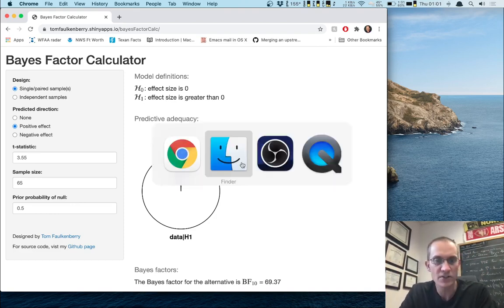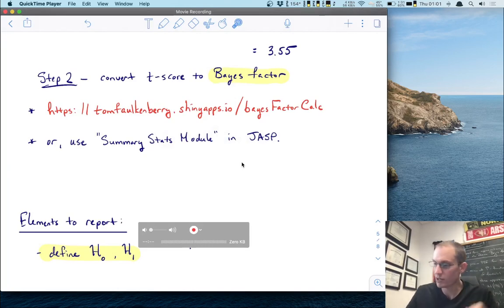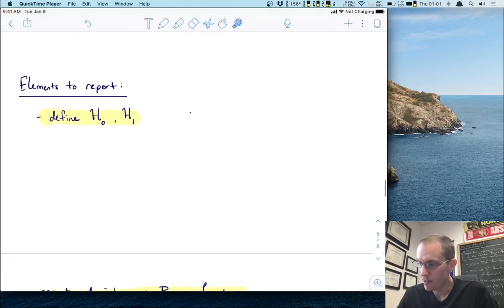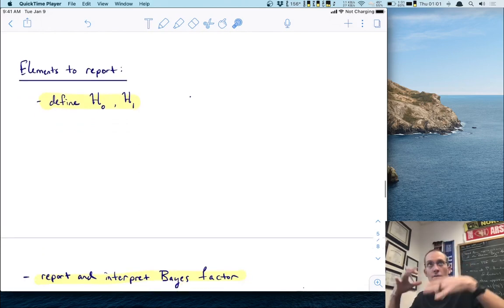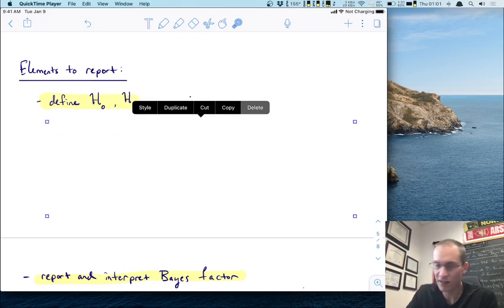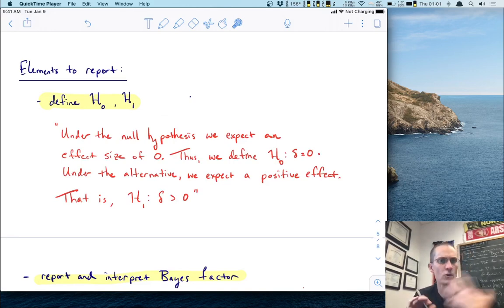So I'm going to go back to our notes and we're going to take all of this information that we got from the calculator and write it down. So we're going to talk about how to report this work. So the elements to report, I've got them highlighted here. The first thing that we need to do is, you know, think about writing this up in a paper. You first need to explicitly define your H0 and your H1. And in class, I'll give you a couple of papers that I've written recently where we do this just so you can see how this is done. So here's one way you might do it. This is your Bayesian inference madlibs. Under the null hypothesis, we expect an effect size of zero. Thus, we define H0 to be delta equals zero. Under the alternative, we expect a positive effect. That is H1 is defined as delta bigger than zero. That's how we defined it. So that's a good way to say that.